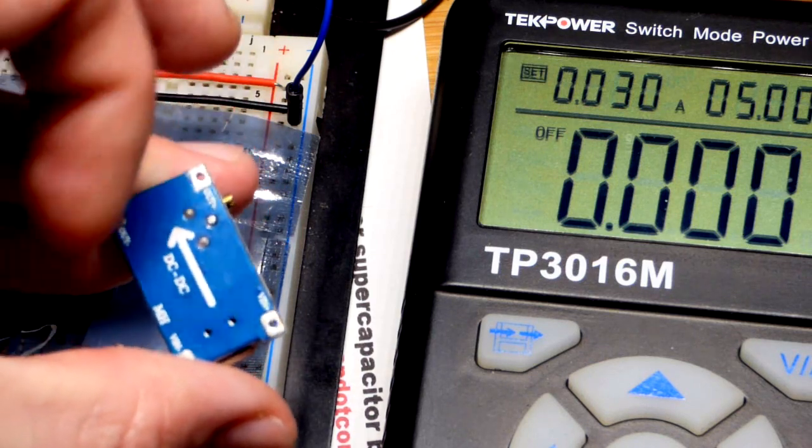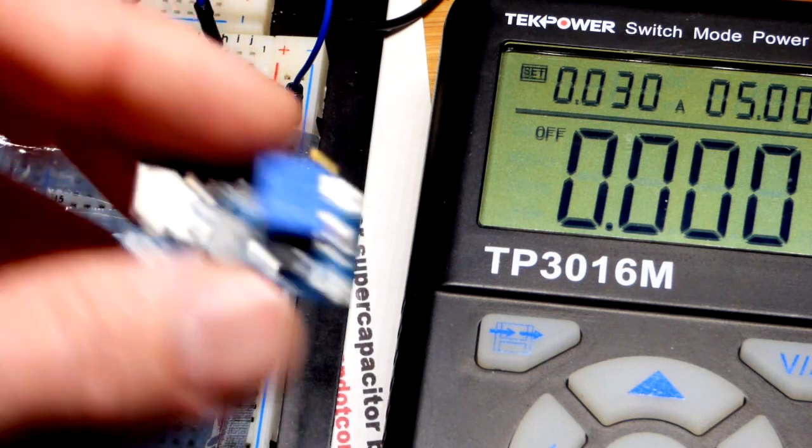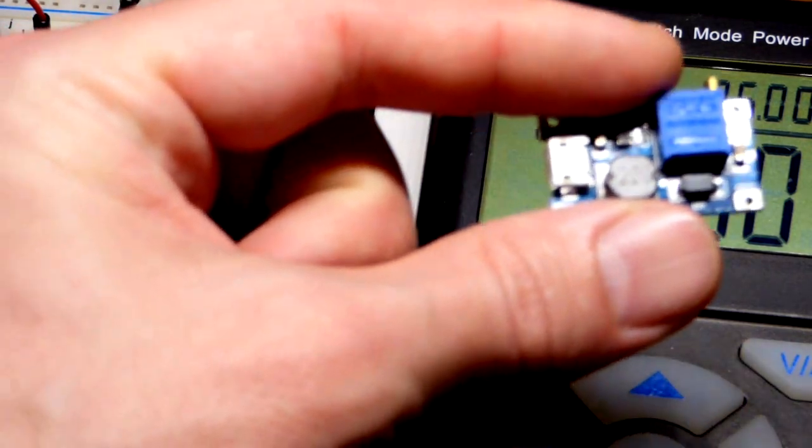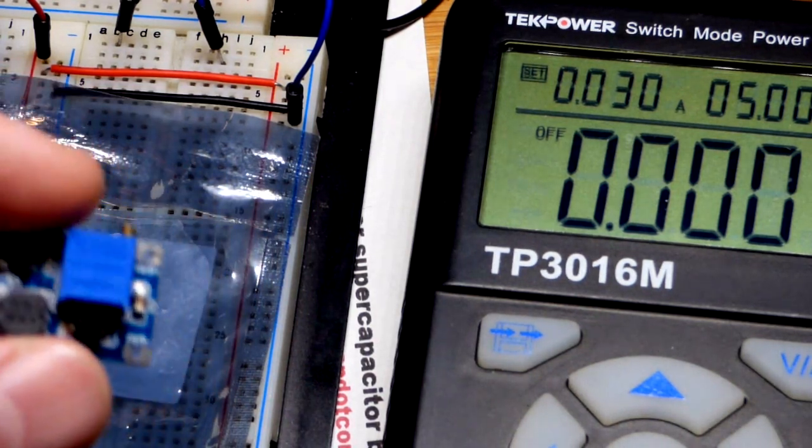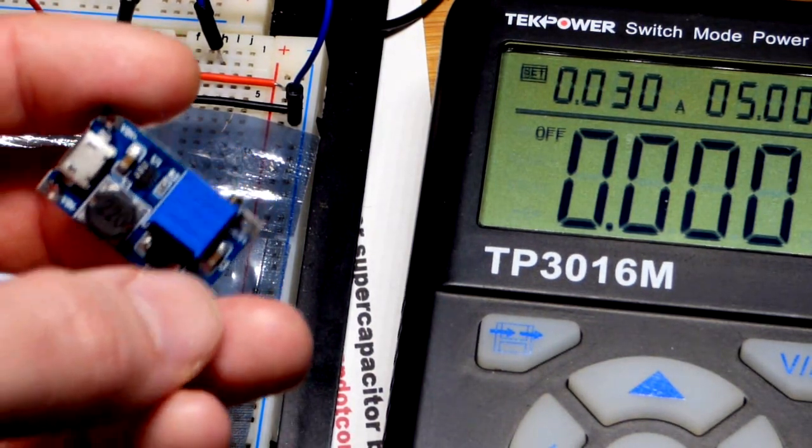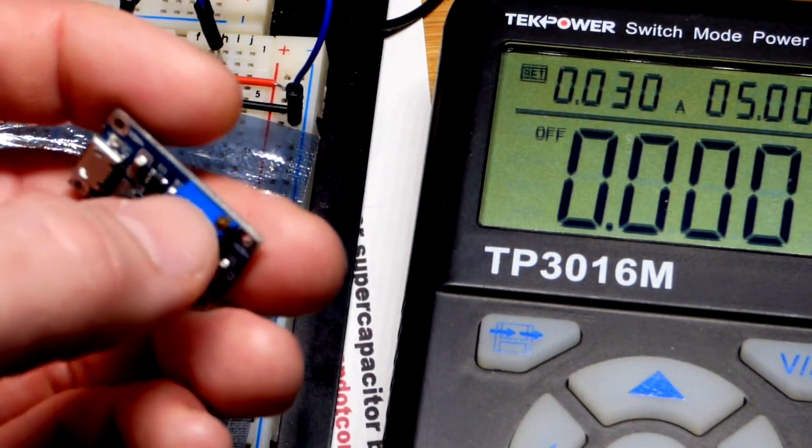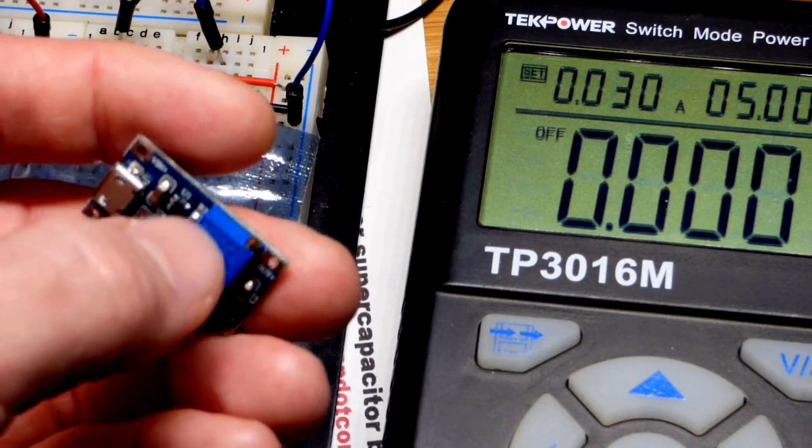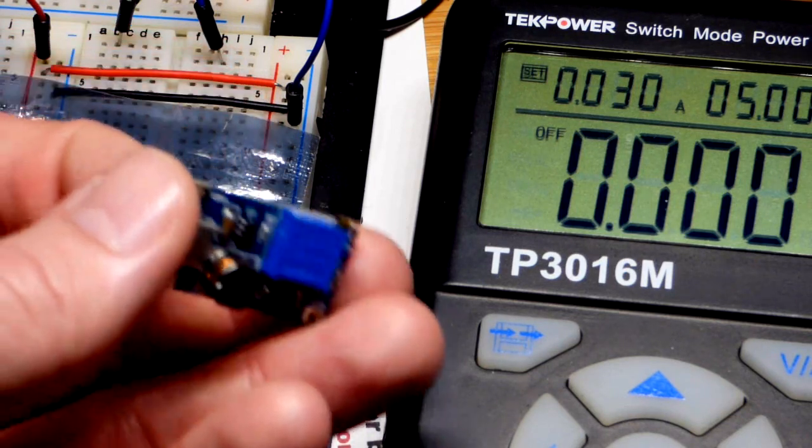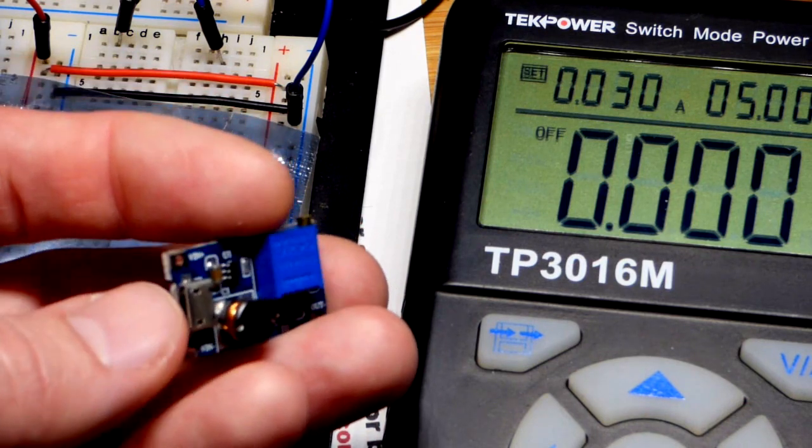You can see where the input is and the arrow points to the output. This is a boost converter - it takes a low voltage, we're going to use five volts from this power supply, and outputs a higher voltage. It's adjustable because it has this trimmer potentiometer to adjust it.